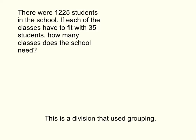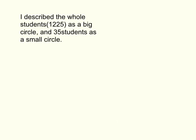This is a division that uses grouping. I described the whole students, 1225, as a big circle and 35 students as a small circle. So this big circle is 1225 and this small circle is 35. The reason I used 35 students as a small circle is because 35 students are in each class.